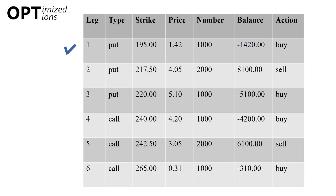On the first leg, we bought 1000 puts with a $195 strike at $1.42. Leg two: we sold 2000 puts with a $217.50 strike, each option at $4.05. The third leg involves buying 1000 puts with a $220 strike at $5.10. For the calls, we open a long position on the $240 strike call, expending $4.20 per option for 1000 options. Next, we go short 2000 calls with a $242.50 strike at a premium of $3.05. Finally, on the last leg, we buy 1000 calls at $0.31 per option with a $265 strike.